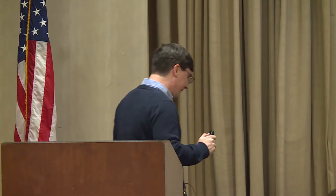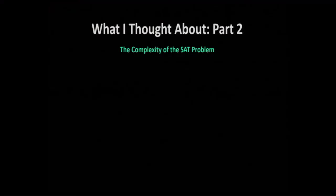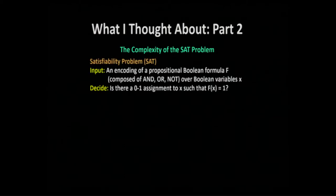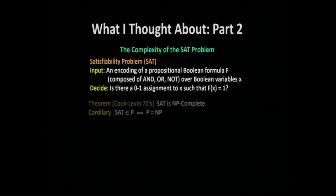Part two is about the complexity of the SAT problem. In SAT, I'm given the encoding of a propositional logic formula f, composed over and/or/not gates with Boolean variables x, and I want to know: is there a zero-one assignment to these variables that makes the formula output one? It's the canonical NP-complete problem, solvable in polynomial time if and only if P equals NP, so understanding its complexity is tightly tied to the P versus NP question.